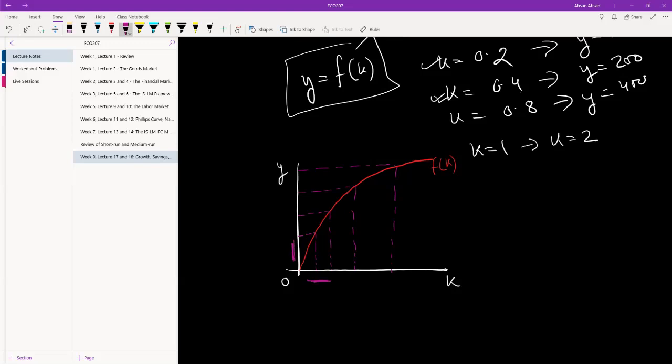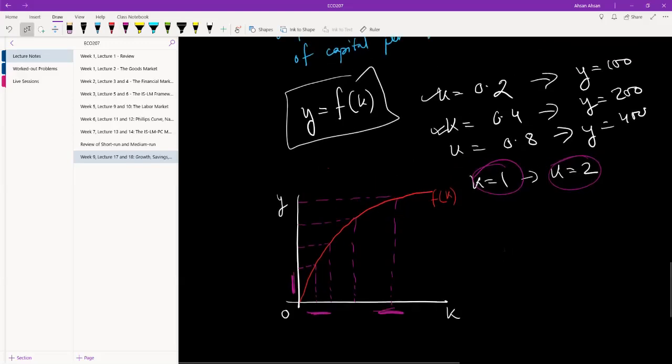But when we have a lot of capital, as we said, if we have k equals to one and then it becomes k equals to two, when we have a lot of capital and then capital increase a little bit again, y doesn't increase by a lot. So this is a decreasing relationship. This represents decreasing return to scale.